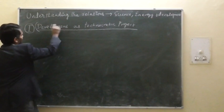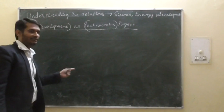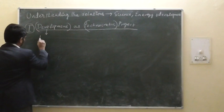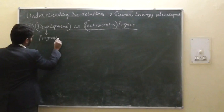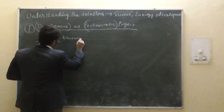First, I would like to explain the term 'development,' followed by what a 'technocratic project' means, before getting into the theoretical premises of science, energy, and development. The term 'development' is always equated with another term: 'progress.' Progress refers to achieving a desired end.